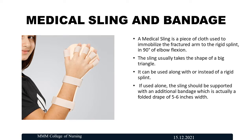A medical sling is a piece of cloth used to immobilize the fractured arm to a rigid splint at 90 degrees of elbow flexion. The sling usually takes the shape of a large triangle and is used along with or instead of a rigid splint. If used alone, the sling should be supported with an additional bandage folded to about five to six inches.